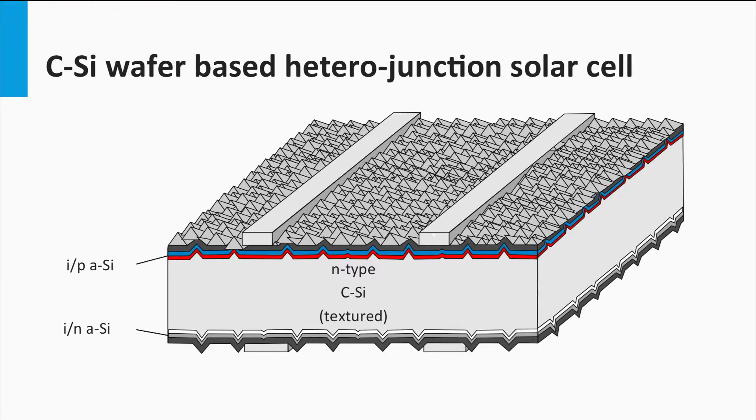The junction at the front side is formed using a thin layer of only 5 nm of intrinsic amorphous silicon, which is indicated by the red color. A thin layer of P-doped amorphous silicon is deposited on top and here is indicated with the blue color. The heterojunction forces the holes to drift to the P-layer.